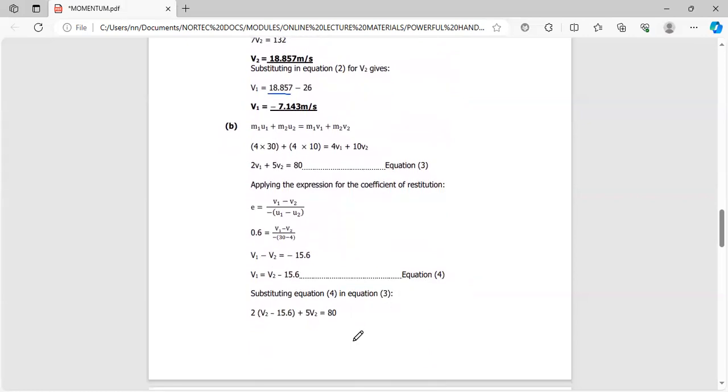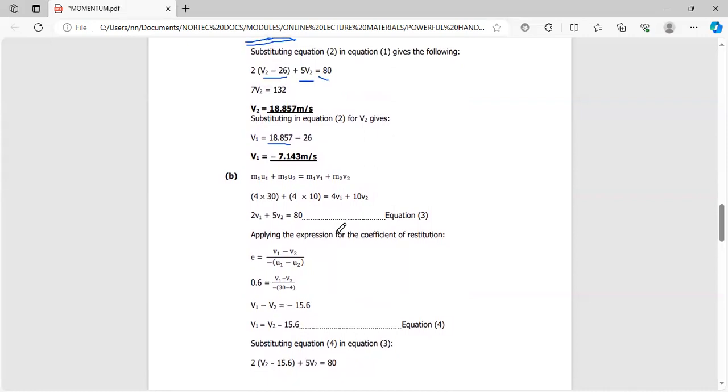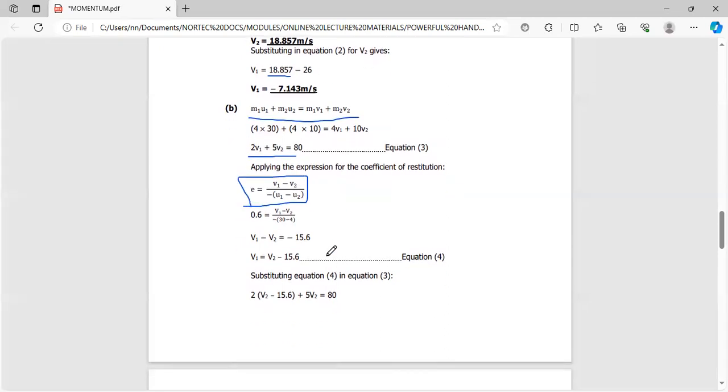The third part asks: what if this collision is now partially elastic, with E equal to 0.6? We'll still start with M1U1 plus M2U2 equals M1V1 plus M2V2. Substituting everything, the equation still comes out as 2V1 plus 5V2 equals 80. But the difference is on the coefficient of restitution—we used 1 for perfect elastic, but for partial elasticity we use 0.6.